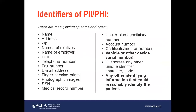There are many identifiers of personally identifiable information and protected health information, including some unusual ones — such as the vehicle identification number on your car, which can be connected to you through Department of Motor Vehicle records and therefore identify you. The important thing is that any identifying information that could reasonably identify a patient or client should be protected.